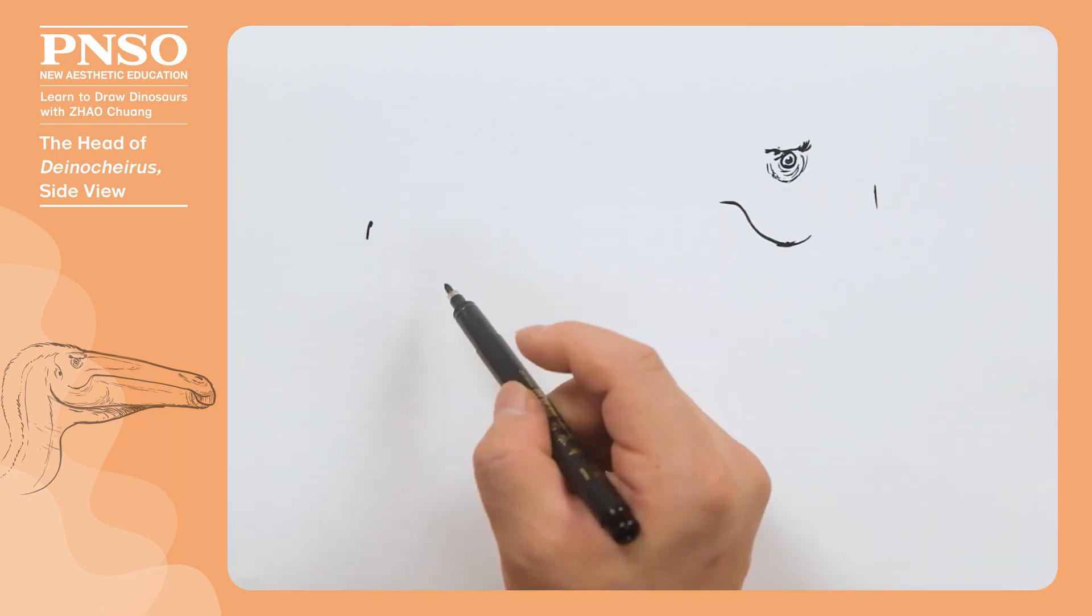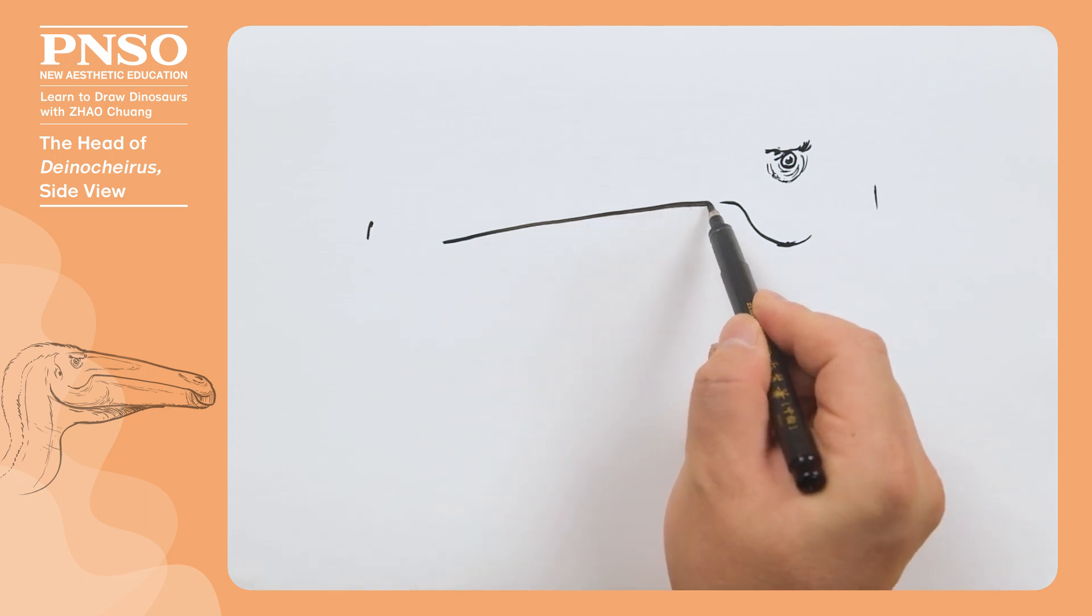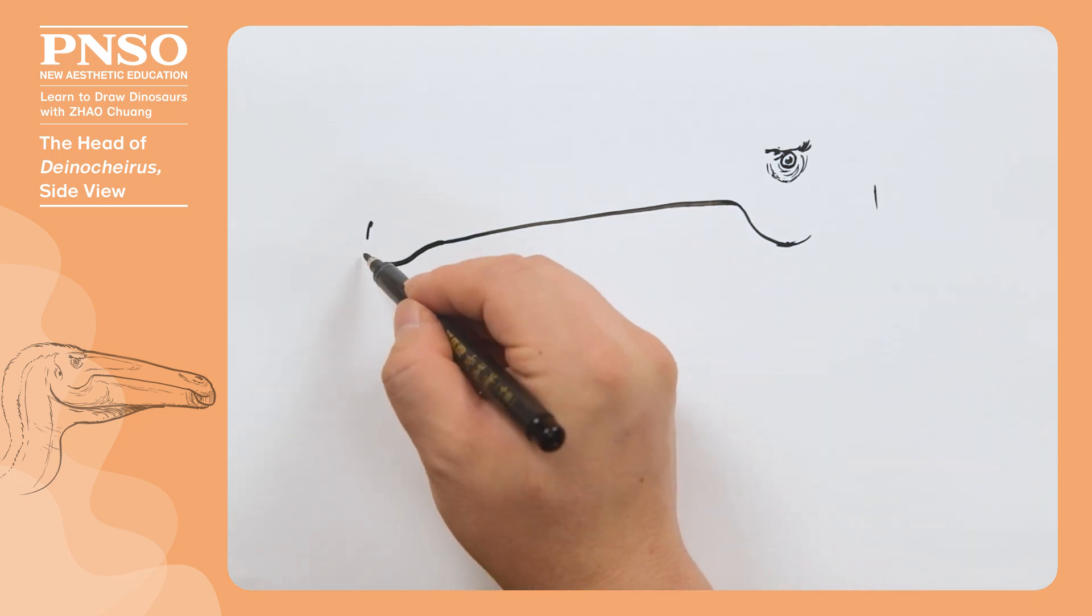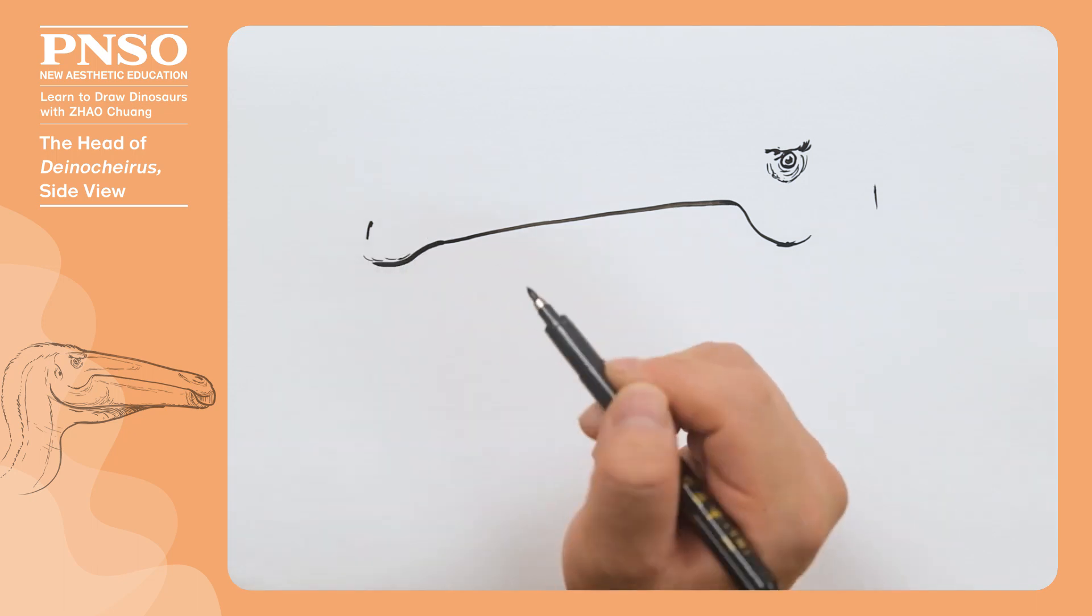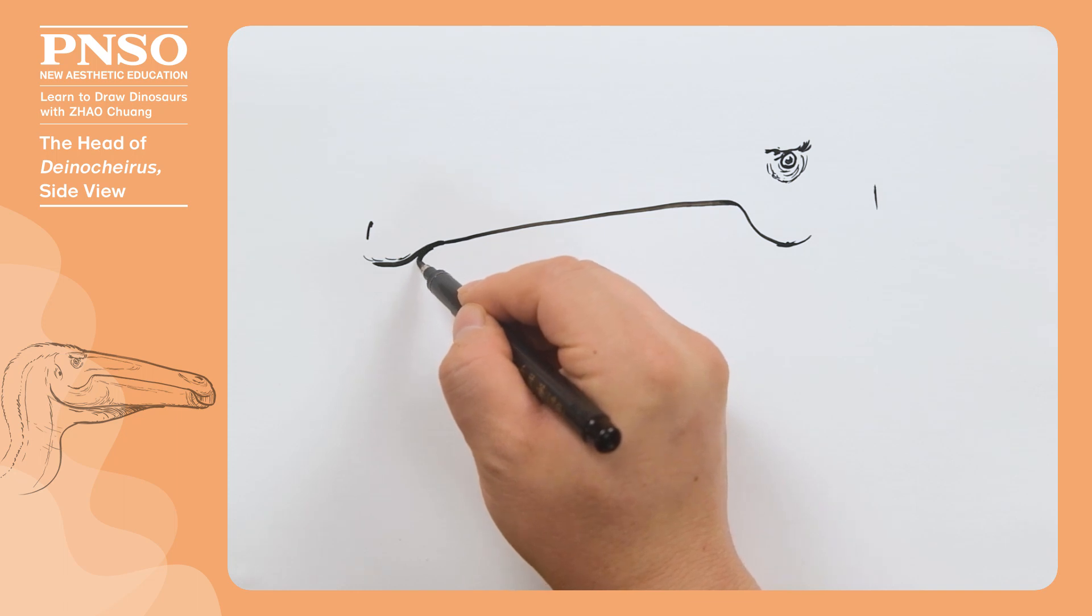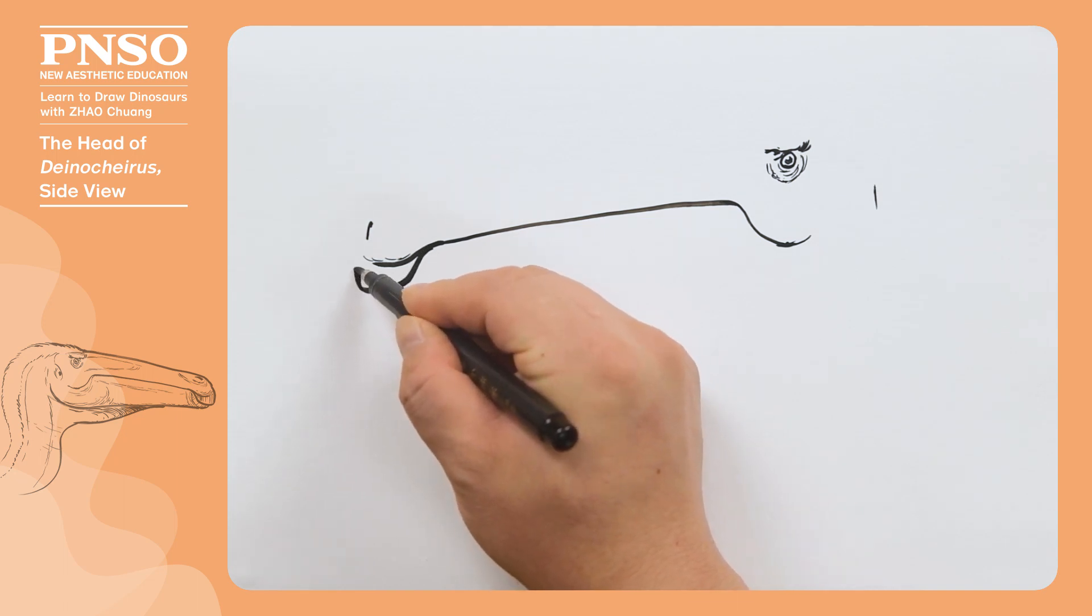Then we extend the line forward. The front of its mouth was similar to a duck's bill, and according to the fossils, this part is slightly bulged outward. When it was alive, there might be a keratinous beak growing along the bottom, like the shape I am drawing.